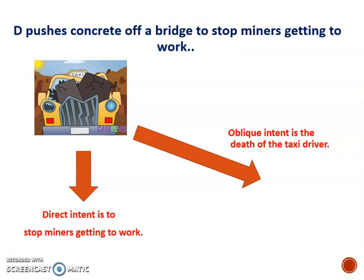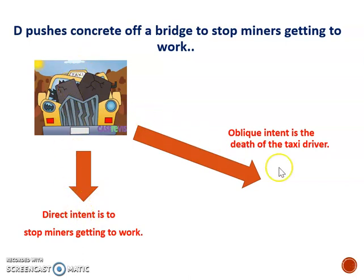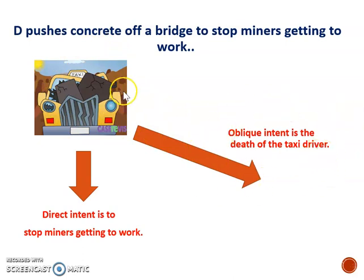Another example is the case of Hancock and Shankland, where the defendants pushed concrete off a bridge. Their direct intent was to stop miners getting to work, but the concrete hit a car and somebody was killed. The direct intent was to stop miners getting to work, but the oblique intent was the death of the taxi driver — because if you push concrete off a bridge, it is virtually certain you are going to cause death or serious injury. The law says that you intended this consequence of your main action.